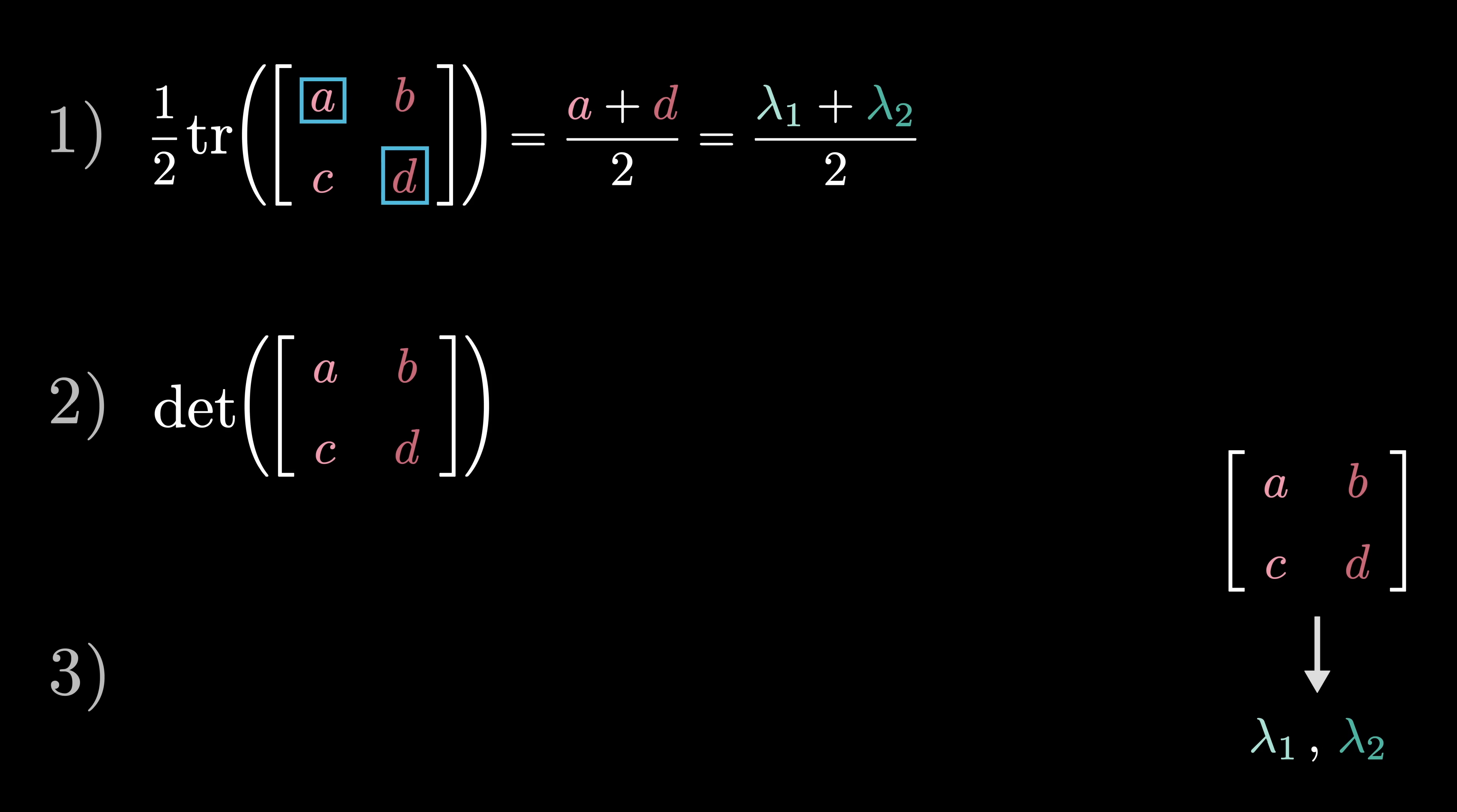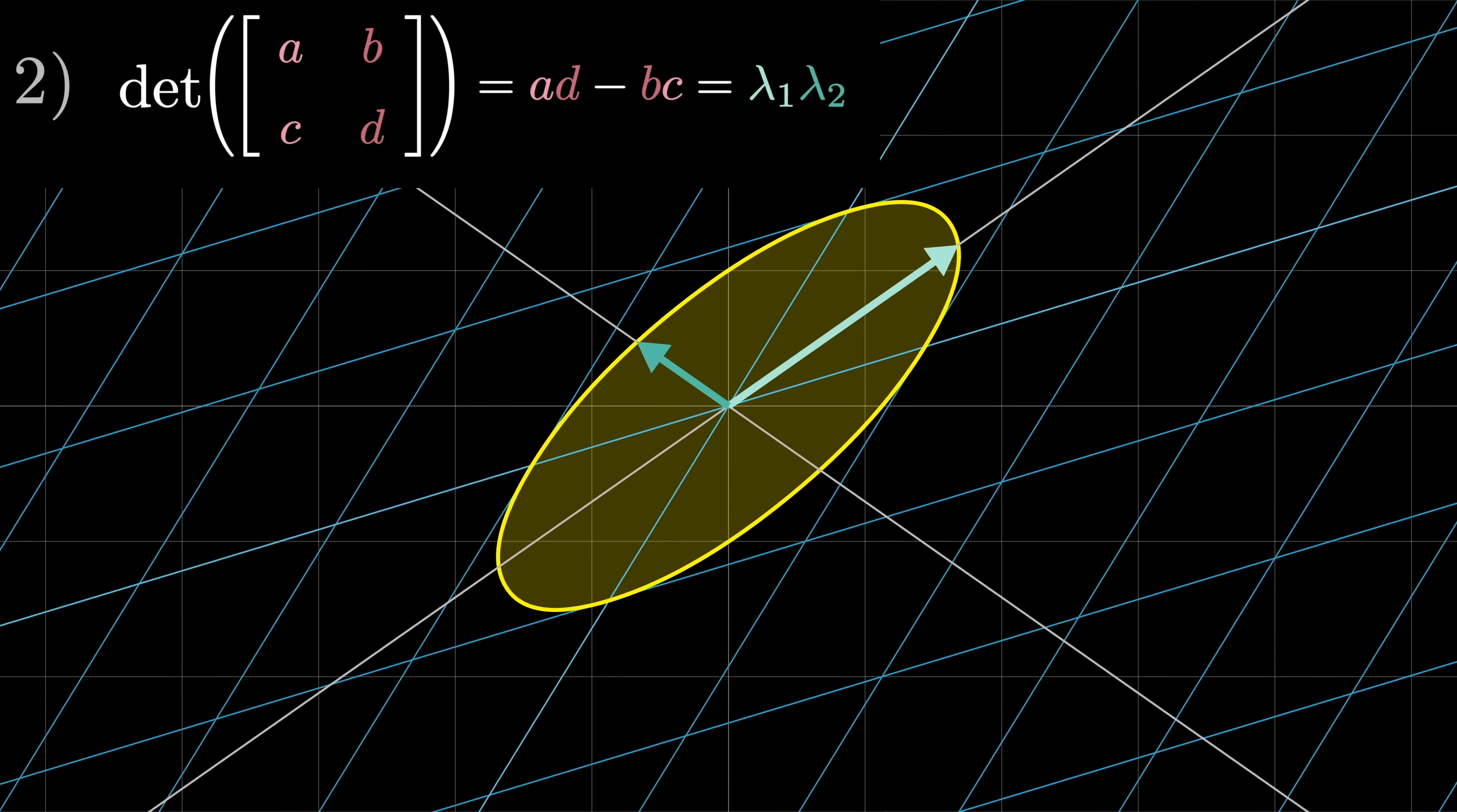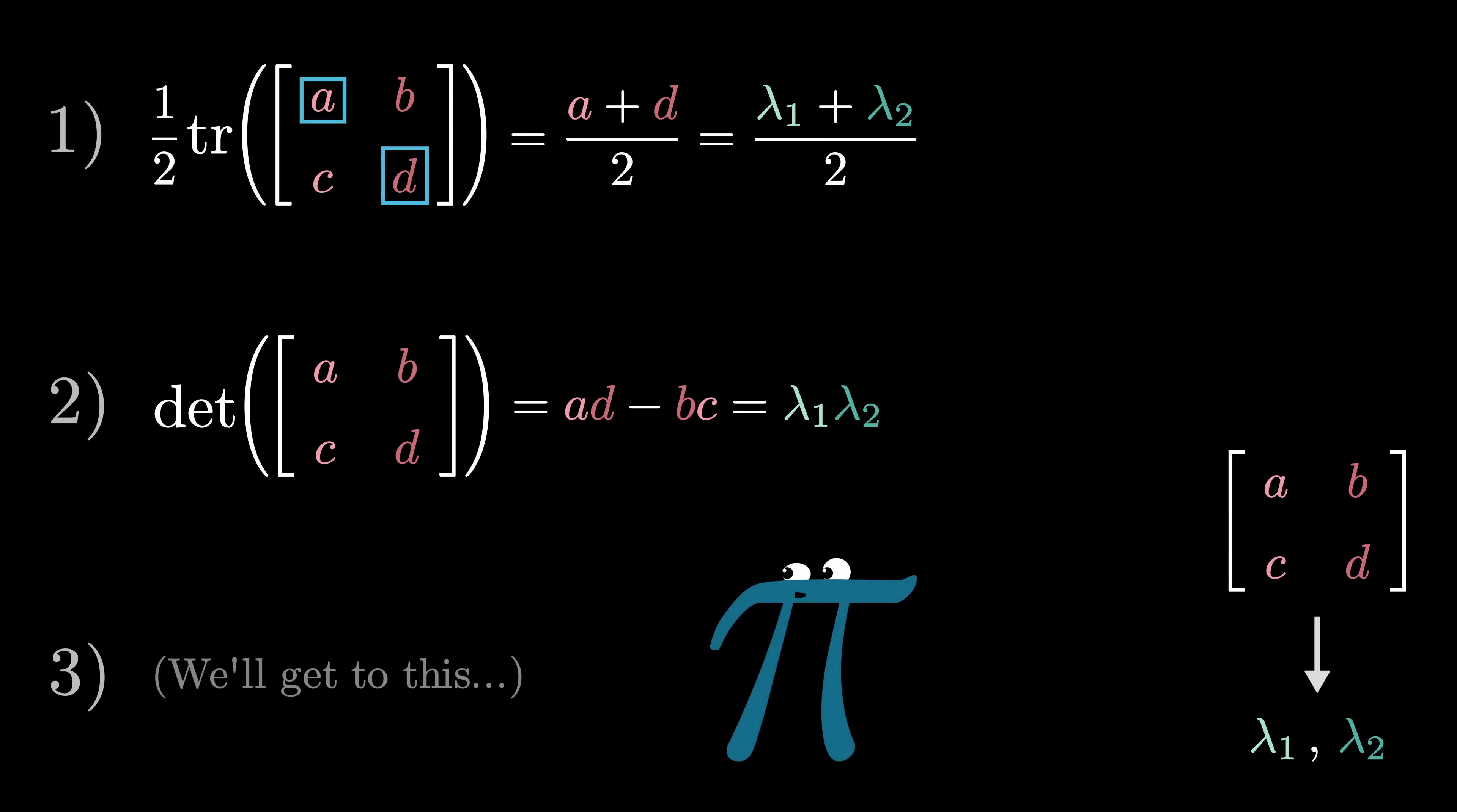Number two, the determinant of a matrix, our usual AD minus BC formula, is equal to the product of the two eigenvalues. And this should kind of make sense if you understand that eigenvalues describe how much an operator stretches space in a particular direction and that the determinant describes how much an operator scales areas or volumes as a whole. Now before getting to the third fact, notice how you can essentially read these first two values out of the matrix without really writing much down.